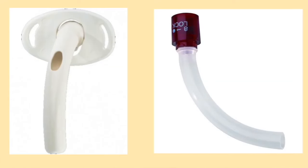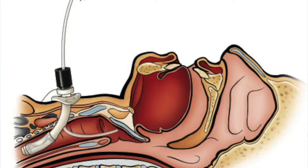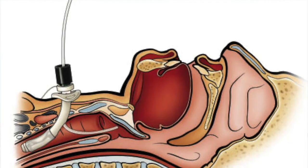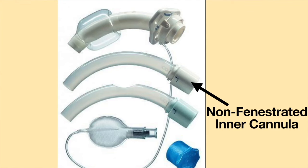When suctioning through a fenestrated tracheostomy tube, it is important to make sure a non-fenestrated inner cannula is in place. This will prevent the suction catheter from passing through the fenestrations and damaging the surrounding tissue. A non-fenestrated inner cannula is usually packaged with the fenestrated tracheostomy tube. Before suctioning, use the non-fenestrated inner cannula — this will guide the suction catheter into the trachea.